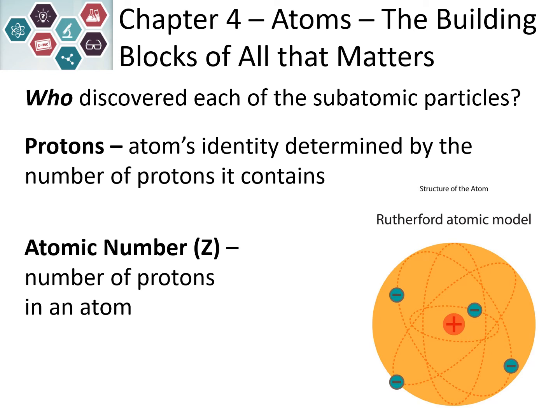Protons help us identify what type of element the atom is — it's determined by the number of protons. Rutherford predicted the nuclear model: a nucleus at the center made of positive protons, with negative electrons in the empty space around it. This leads to the atomic number, represented by the letter Z, which tells us the number of protons in an atom. The atomic number is the whole number found in the top portion of the boxes on the periodic table.